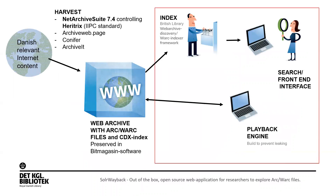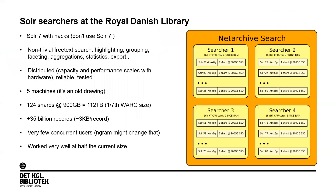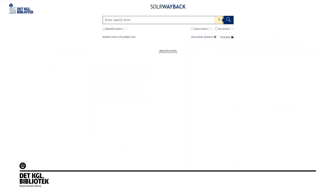Solar Wayback is an out-of-the-box, open-source web application for researchers to explore ARC and WARC files using the British Library web application. This is our Solar Wayback start page. It's a modern web application built with Vue.js, with a divided architecture, single page application — all in all just a modern code architecture.